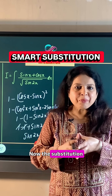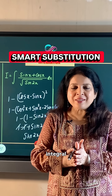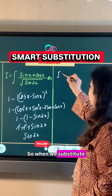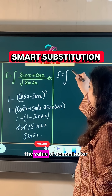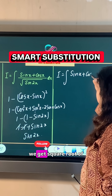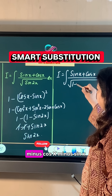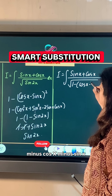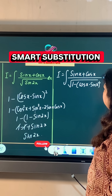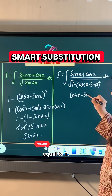Now this substitution appears to be strange but it makes the integral collapse beautifully. So when we substitute the value of the denominator, we get square root of 1 minus cos x minus sin x whole square, and let us put cos x minus sin x equal to t.